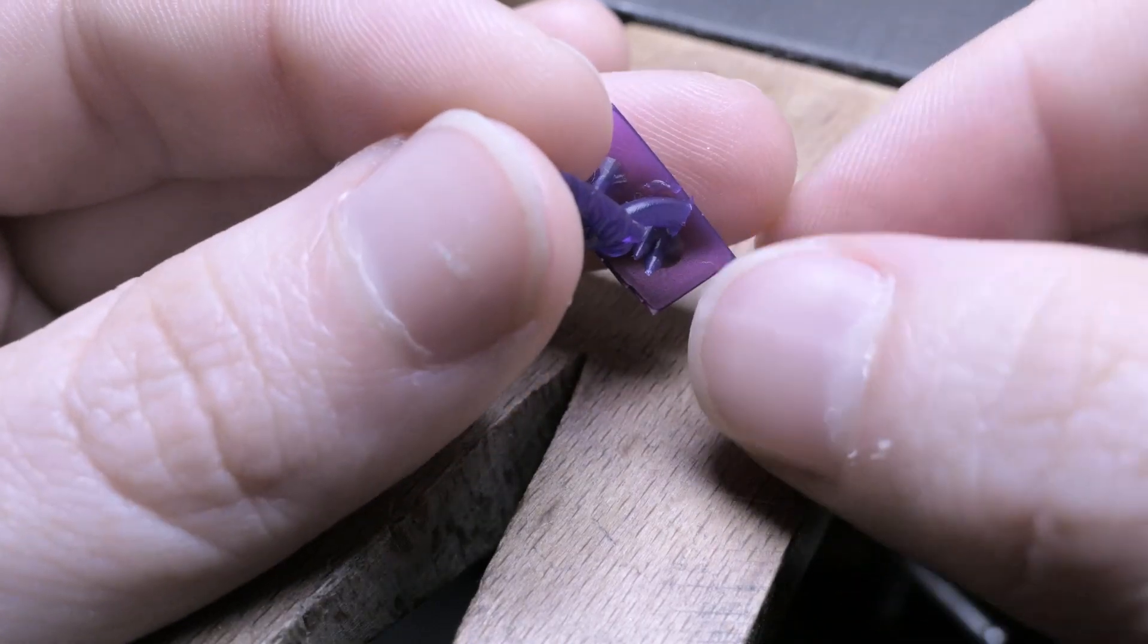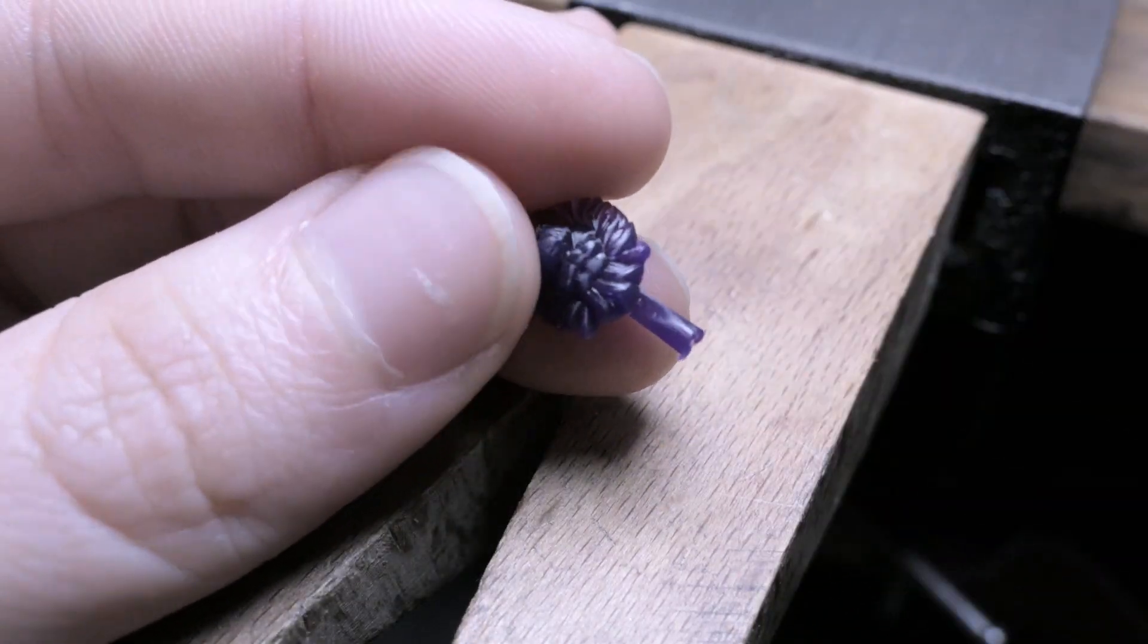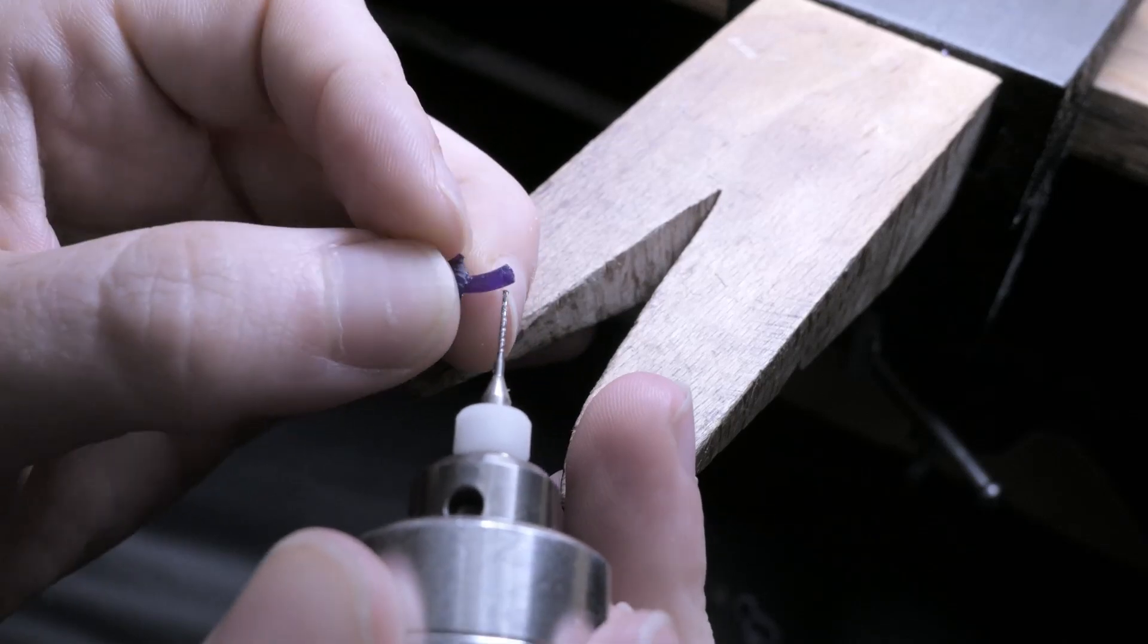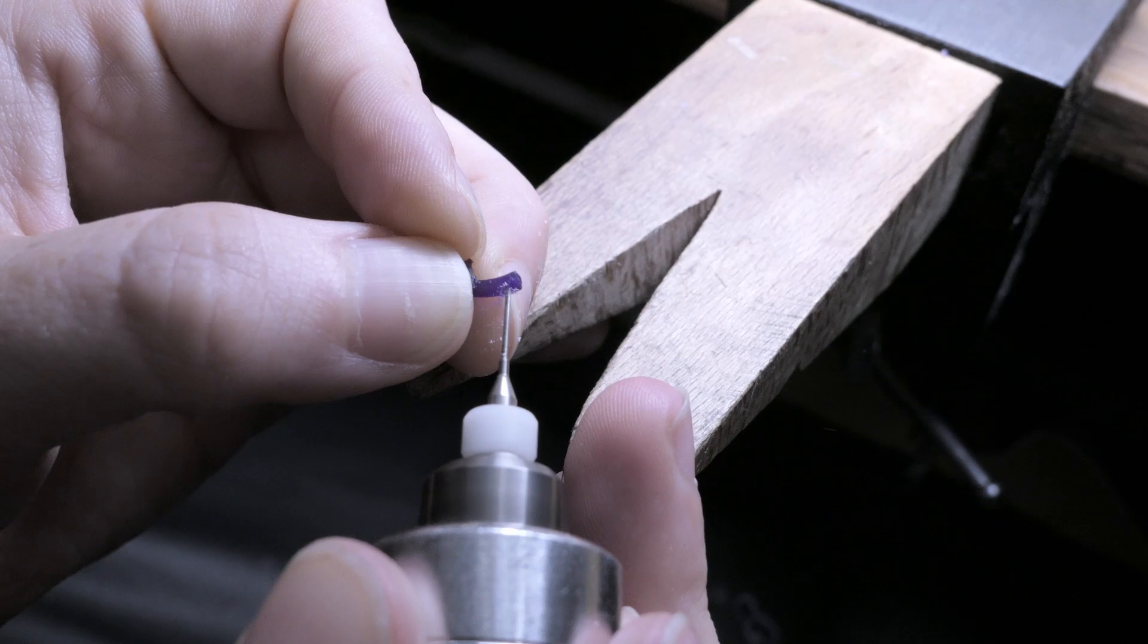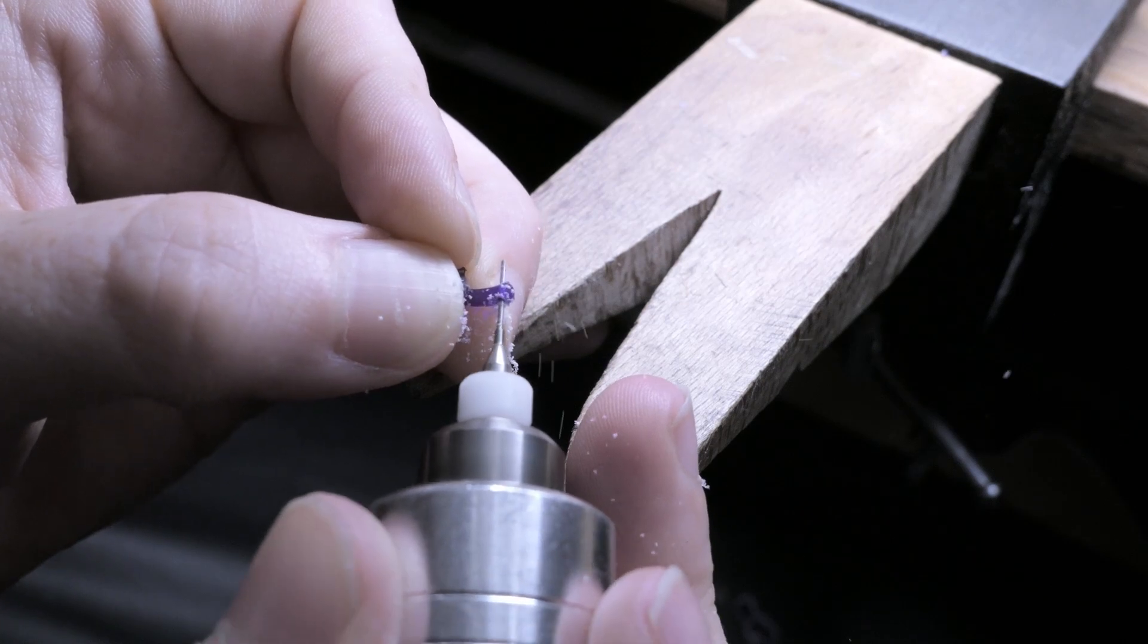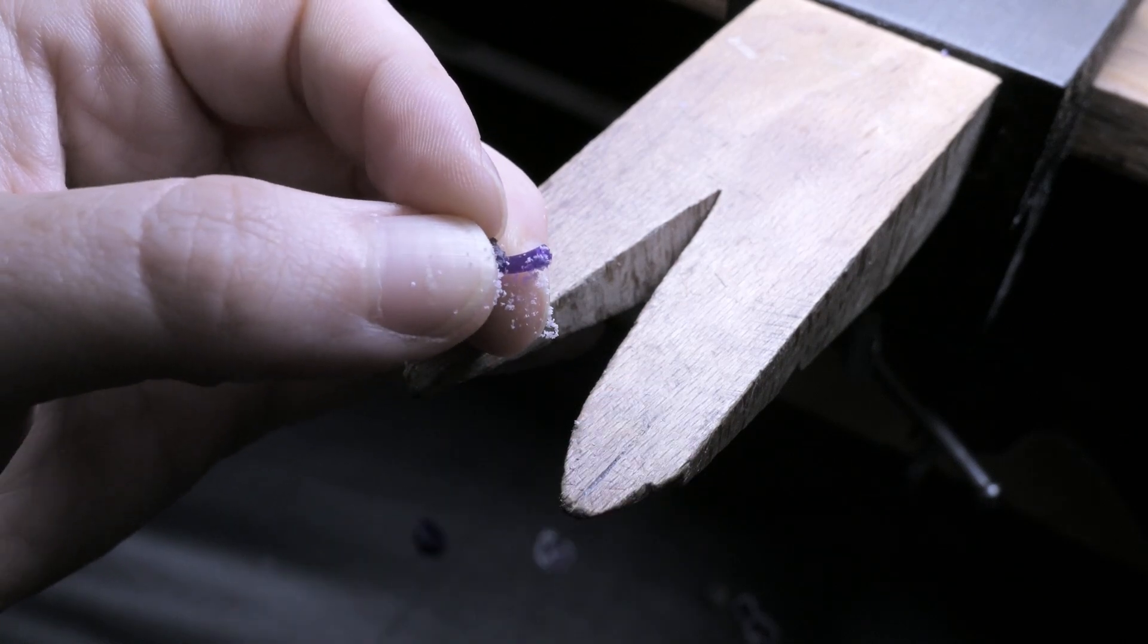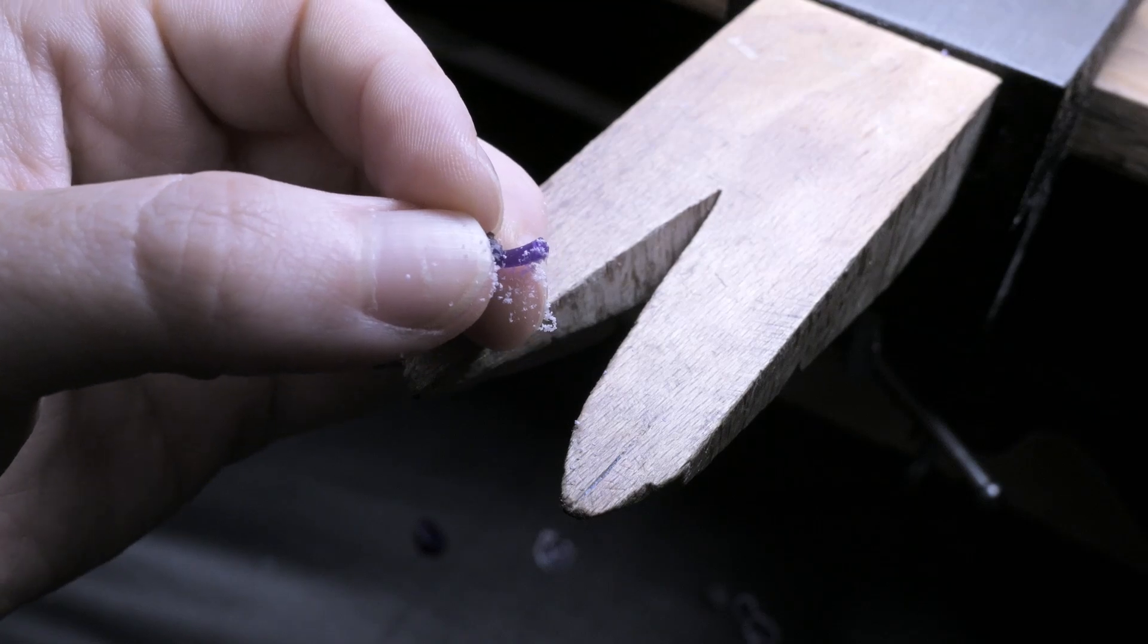So as I've shown before with this resin, one of the quirks is that it needs to be submerged in glycerin while it's curing. And with smaller prints like this, I just find it easier to drill a hole through the sprue. That way it can be mounted on this little homemade rack that I have.